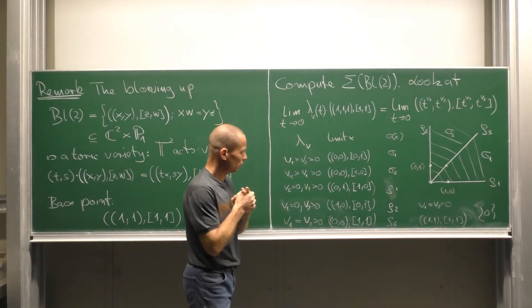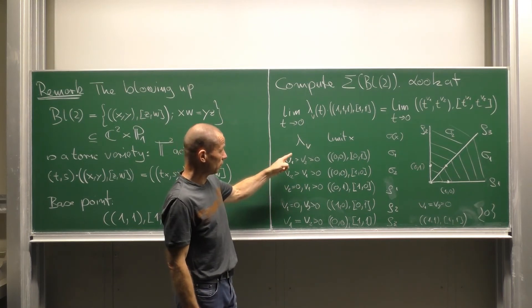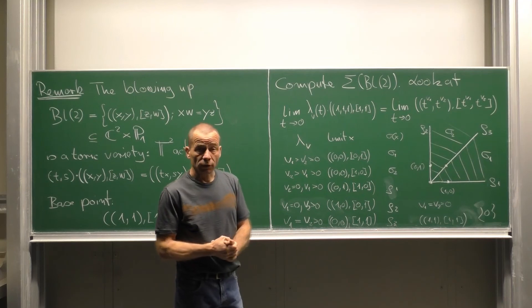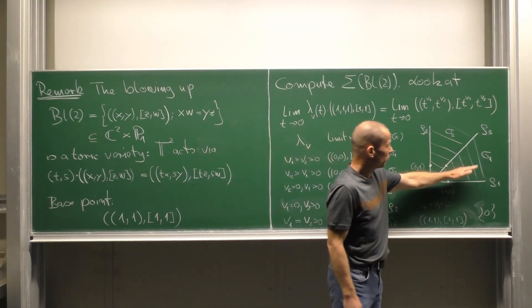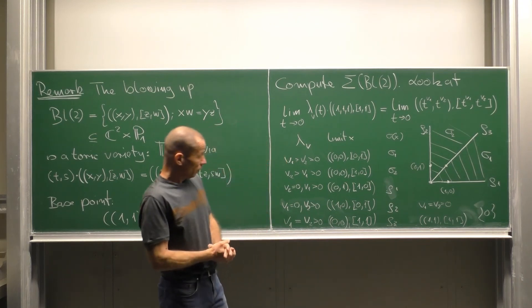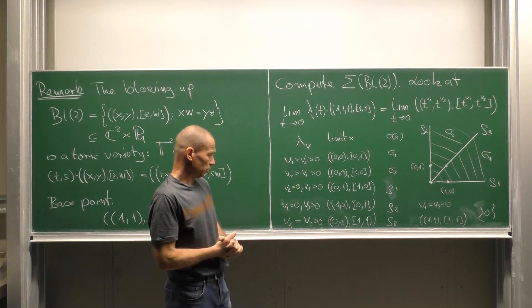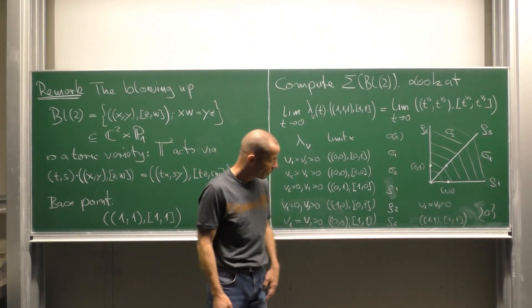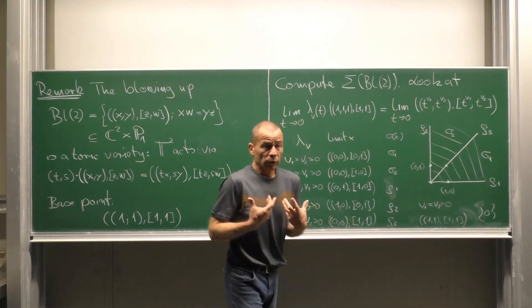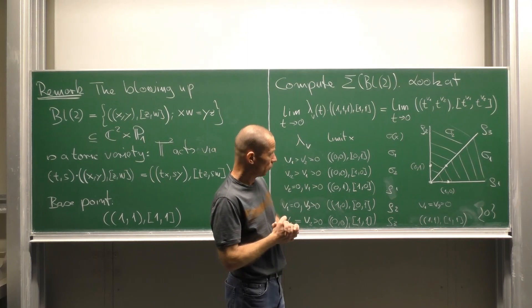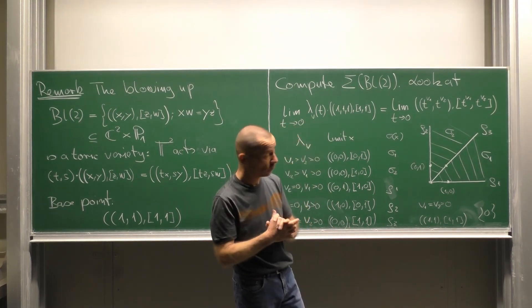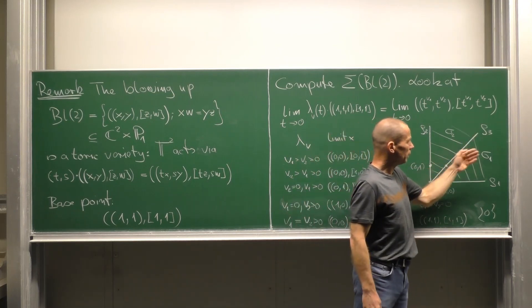Let us look at two of them. One case is V₁ > V₂ > 0: the limit point is (0, 0, 1, _) and the corresponding cone is a two-dimensional cone σ. Another interesting case is V₁ = V₂ strictly greater than zero: the limit point is (0, 0, 1, 1) and this gives us a one-dimensional cone — a ray. So we see that the fan of the blowup of C² at the origin arises from the fan of C², which is just the fan of faces of the quadrant, by inserting a new ray and subdividing the fan.